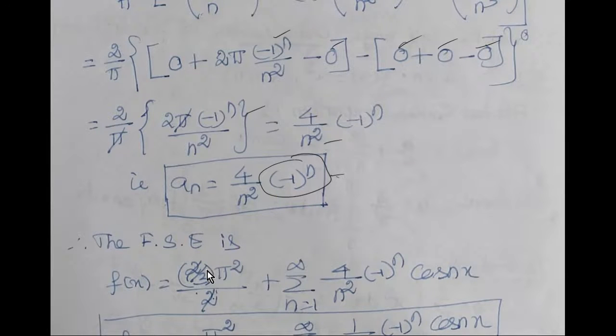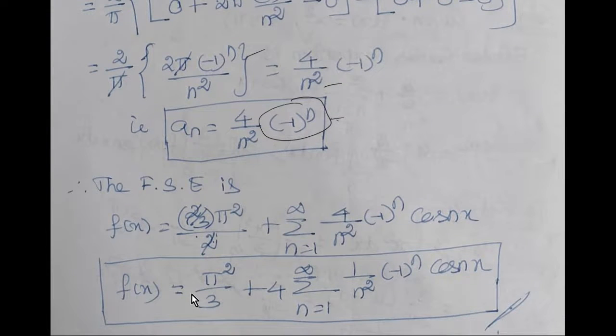Therefore, the Fourier series expansion is a0 by 2. a0 is 2 by 3 pi squared by 2. Plus summation an, 4 by n squared minus 1 to the power n into cos nx. So we get pi squared by 3 plus summation 4 by n squared minus 1 to the power n into cos nx. This is f of x equal to x squared. This is the half-range cosine series expansion.